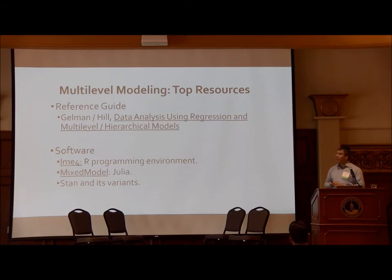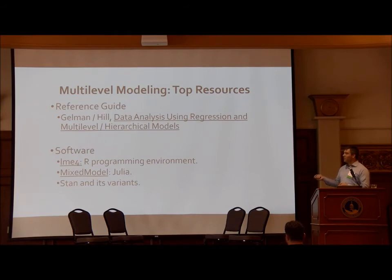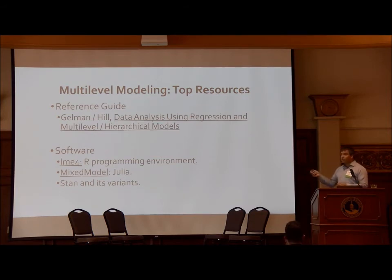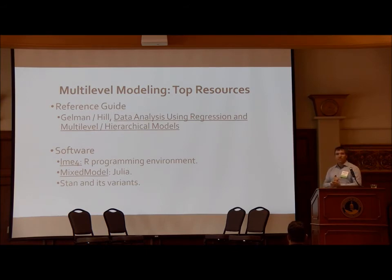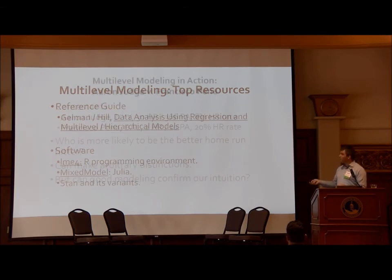If you want to learn more about multi-level modeling, the canonical book at this point is Gelman and Hill — it is surprisingly readable compared to your average statistics textbook. Someone who understands a little about statistics can go through the first couple of chapters and get an idea of what's going on. They are bringing out a new version soon, but the current one is still very good. In terms of software, R is the flagship language for multi-level modeling, largely because Doug Bates is the patron saint — he has since moved to Julia if you want to keep up with him. Stan and its variants are also available across platforms, including Python.